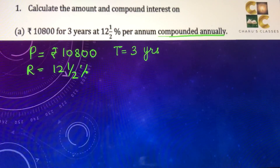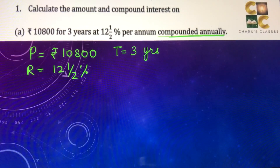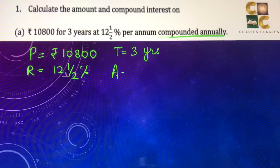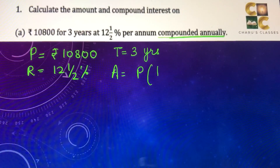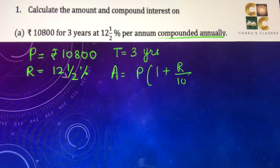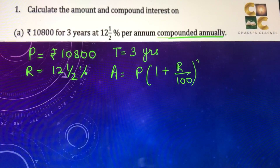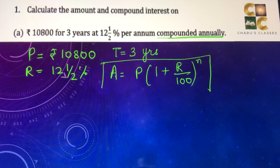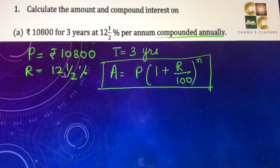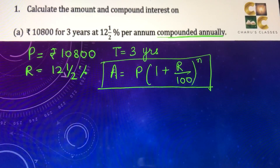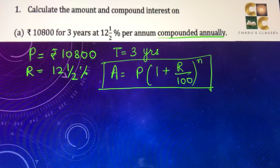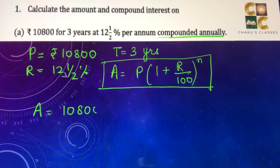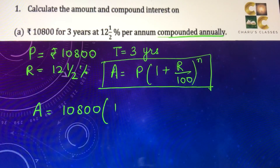Here we have to find the amount and compound interest. The formula for amount is: A = P × (1 + r/100)^n. This is the formula for compounded annually. So here we are going to put the values: A = 10,800 × (1 + r/100)^n.